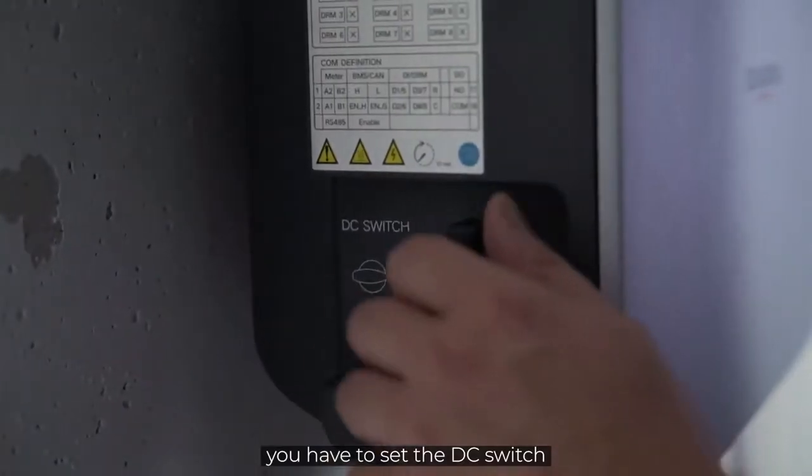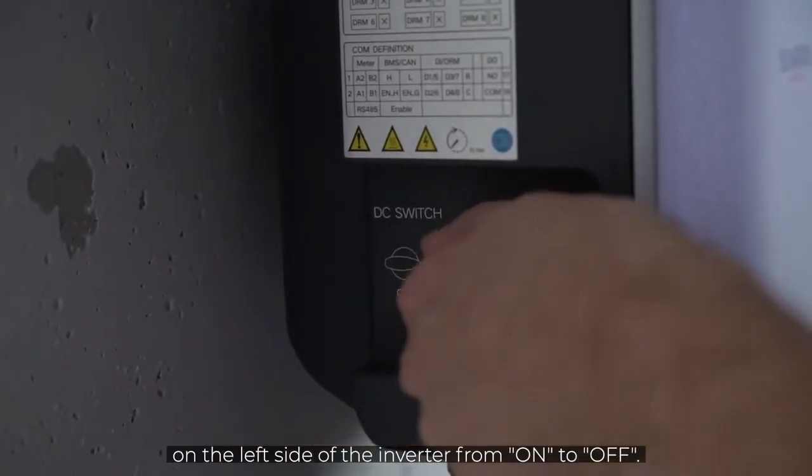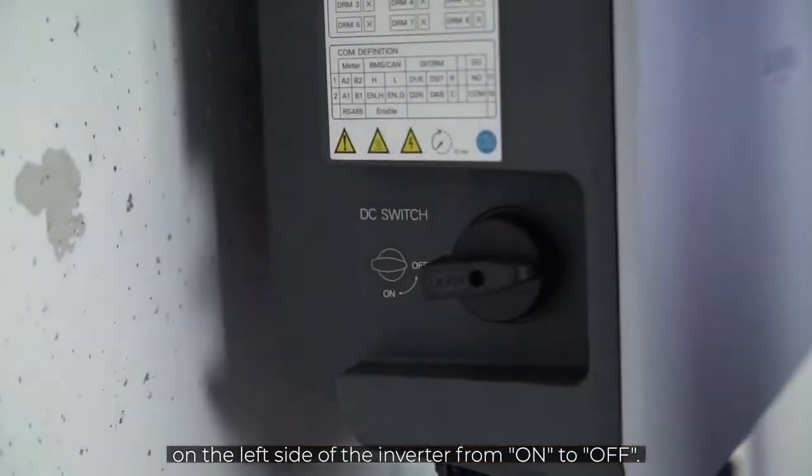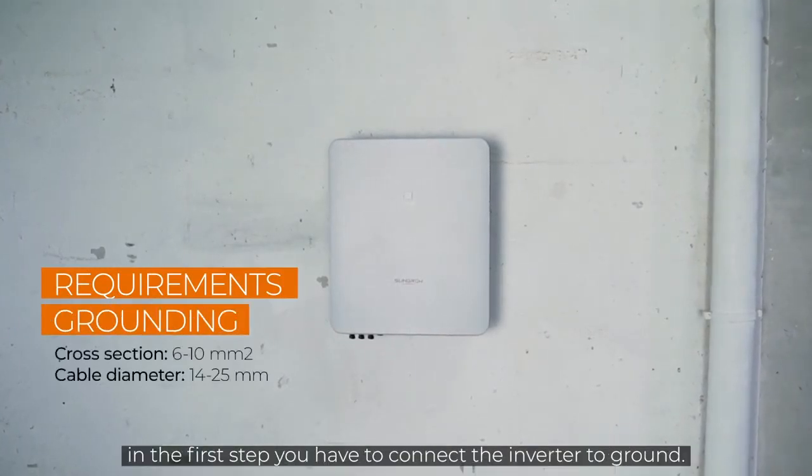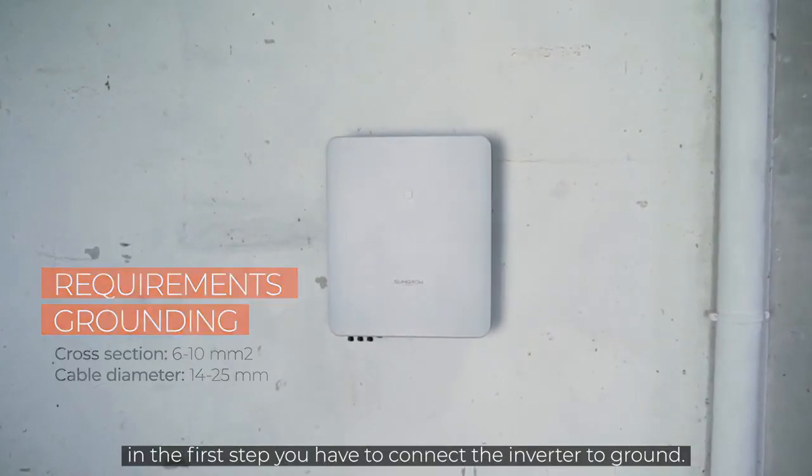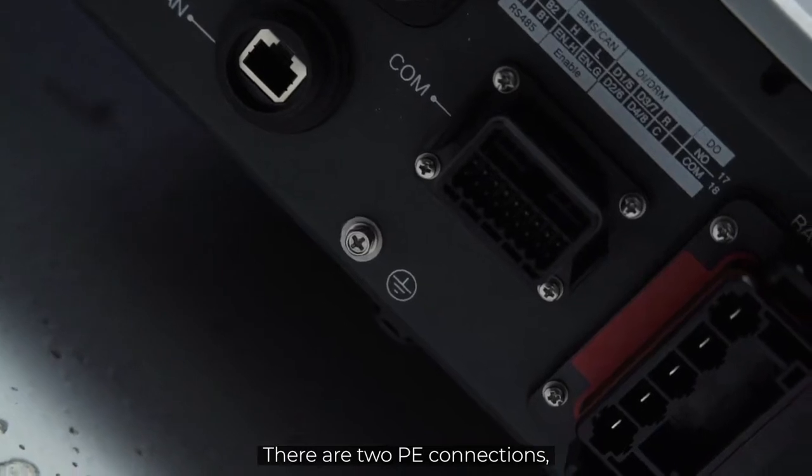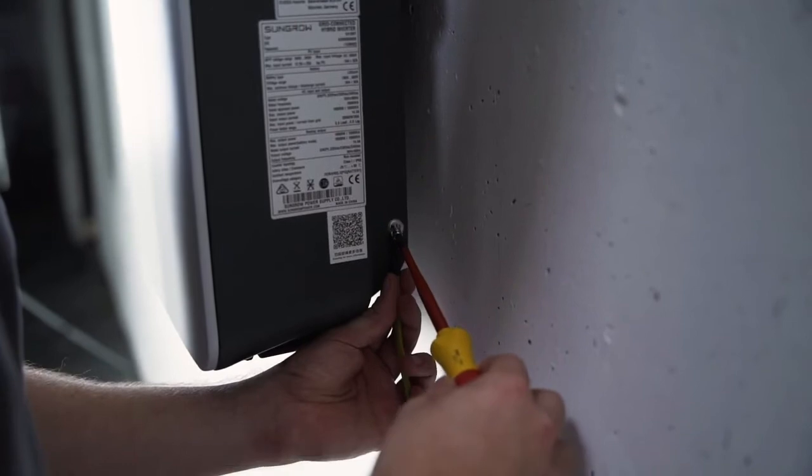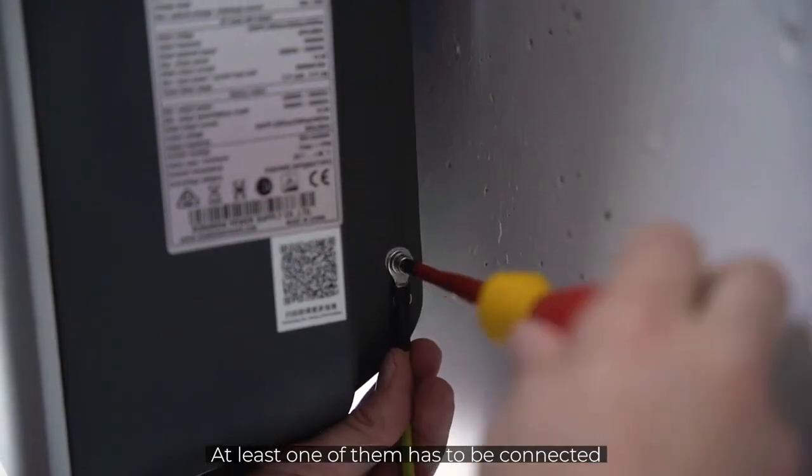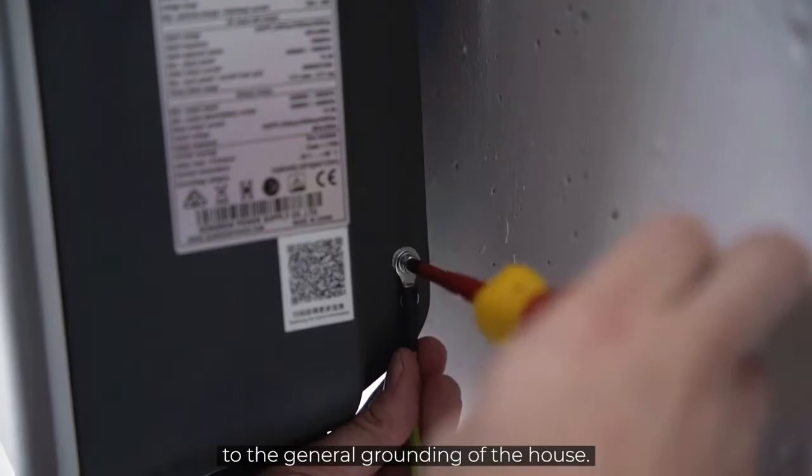Furthermore, you have to set the DC switch on the left side of the inverter from ON to OFF. Now, let's continue with the installation. In the first step, you have to connect the inverter to ground. There are two PE connections, one at the bottom and one on the right side of the inverter. At least one of them has to be connected to the general grounding of the house.